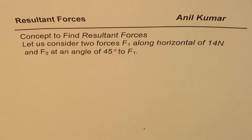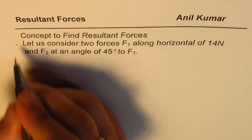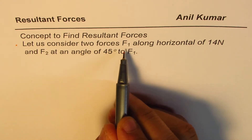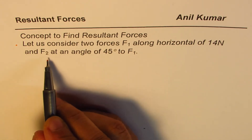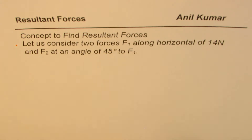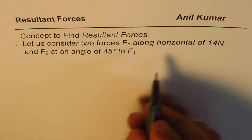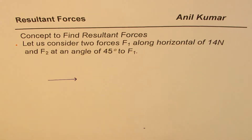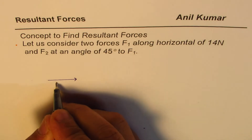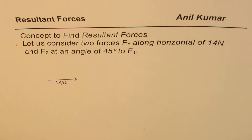I'm Anil Kumar and in this video we'll try to understand the concept to find the resultant forces. Let us take an example: consider two forces, F1 along the horizontal of 40 Newtons and F2 at an angle of 45 degrees to F1. F1 is along the horizontal — let's say this is F1 — and this force is 14 Newtons.